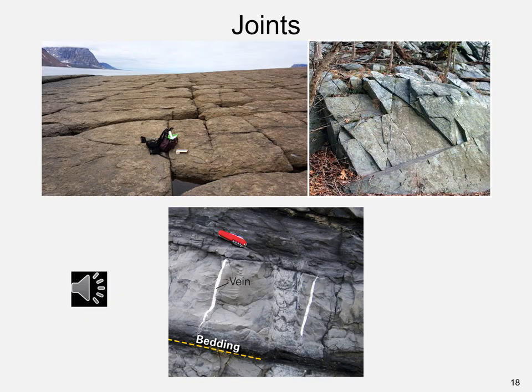Joints are planar rock fractures without any offset. They develop from tensile tectonic stresses in brittle rock. When equal and opposite forces are applied on a body, the stress due to this force is called tensile stress, and the volume of the material stays constant. Systematic joints occur in parallel sets and often control weathering. Groundwater flows through joints, and dissolved minerals precipitate in joints. Joints filled with minerals are called veins. A photograph shows a white quartz vein cutting through darker horizontal limestone.